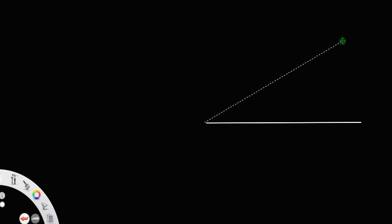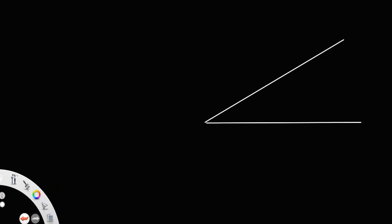Let us consider a horizontal line. Let there be another line making an angle of alpha with the first line. Now, let us draw another line inclined beta with the second line — so this angle is equal to beta.